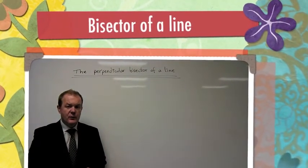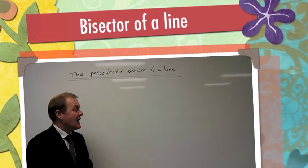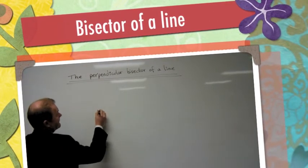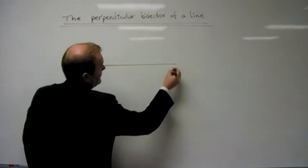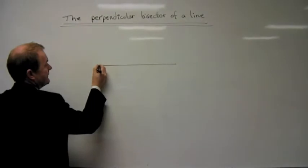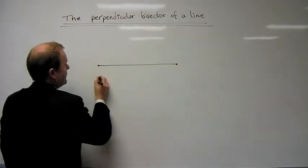We're going to look at how we can construct a perpendicular bisector of a given line. So we're going to start with a line, two points, we'll call it A and B.